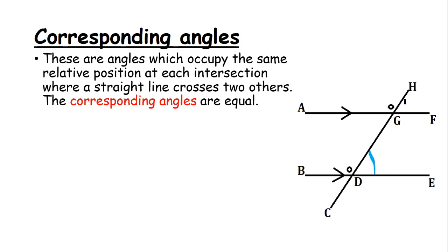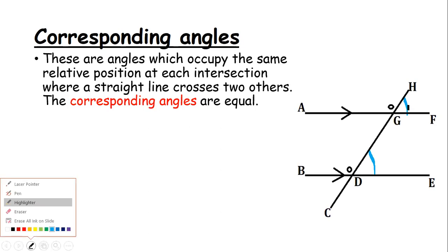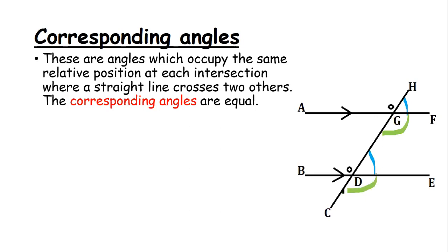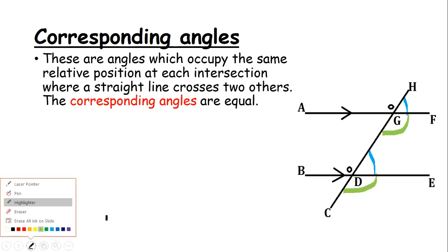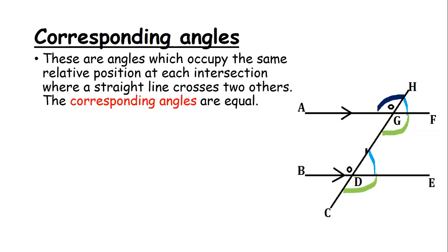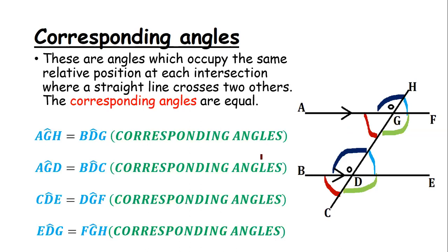Looking at the diagram, corresponding angles are equal. We have four pairs: angle AGH equals angle BDG; angle AGD equals angle BDC; angle CDE equals angle DGF; and angle EDG equals angle FGH — all corresponding angles.